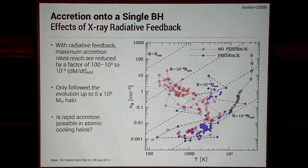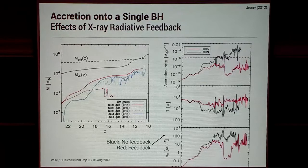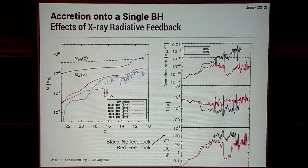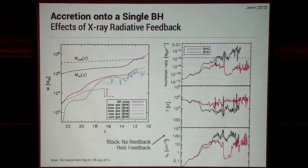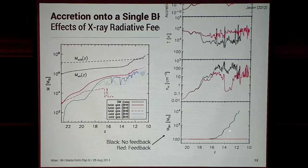The question is whether rapid accretion is possible in more massive halos. Work done at UT Austin by John et al. followed a similar simulation up to 10^8 solar masses. Without feedback, the accretion rate follows the Eddington ratio. But when they include radiation feedback, the accretion rate decreases by 100 to 1,000 times because the environment is heated and more diffuse. Without feedback, black hole growth is by a factor of 100; with feedback, the gas is radiatively heated and puffed out, preventing efficient accretion.